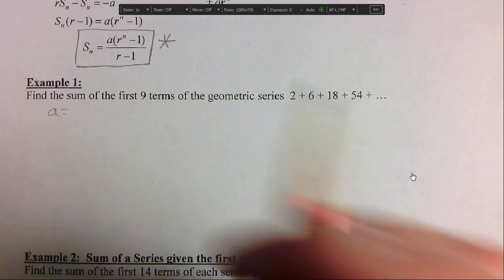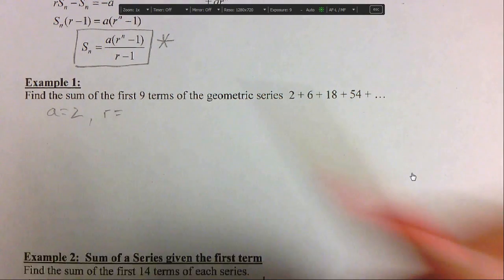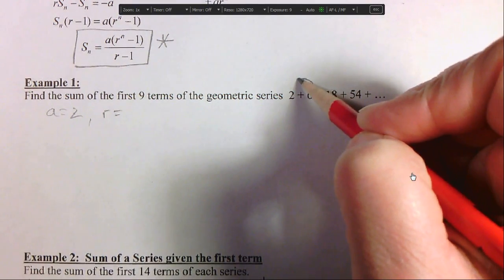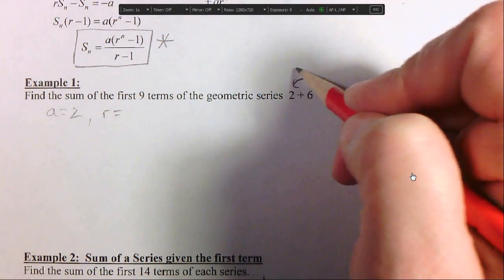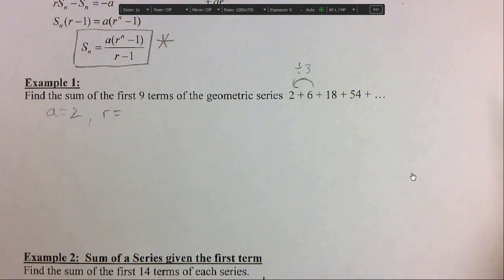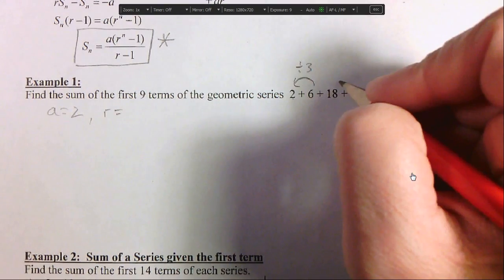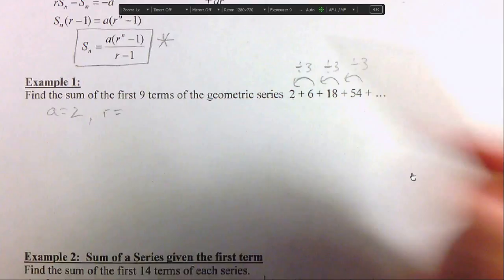We need to know a couple things. We need to know a. a is 2. And r, how are we going to calculate r? Well, r is just what you get when you divide each term by the term before it. So 6 divided by 2 means you're going to divide by 3, so our r equals 3.